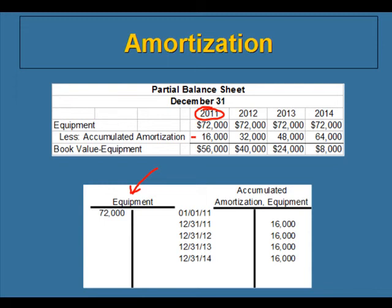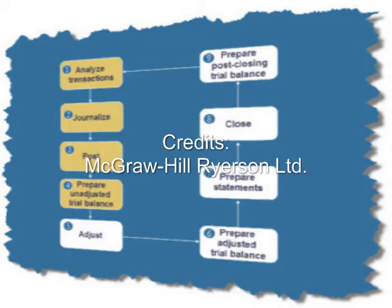In 2012, the equipment account doesn't change — it stays at $72,000 — but the accumulated amortization account increases because now we have two years' worth of amortization in that account. The book value is now $40,000. The accumulated amortization account keeps going up because it accumulates how much amortization we've recorded since we purchased the equipment, and the book value keeps going down until it reaches the salvage value. Thank you.